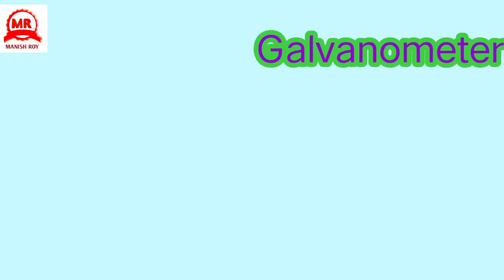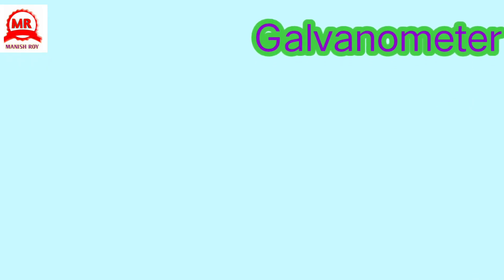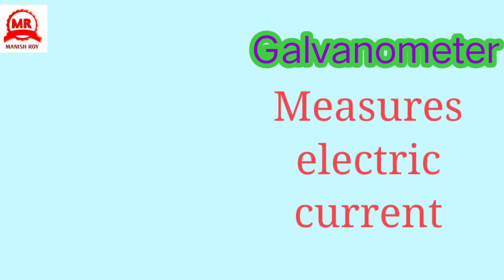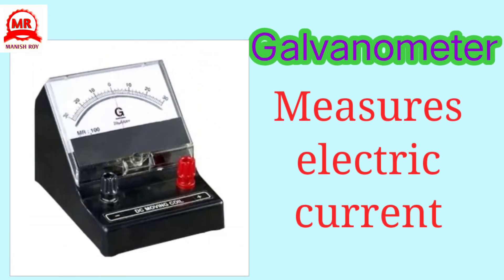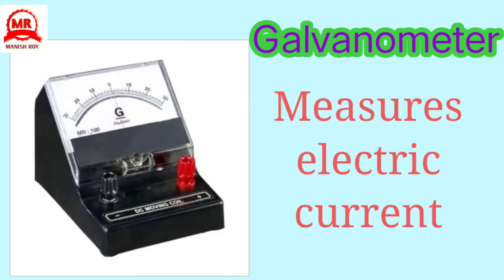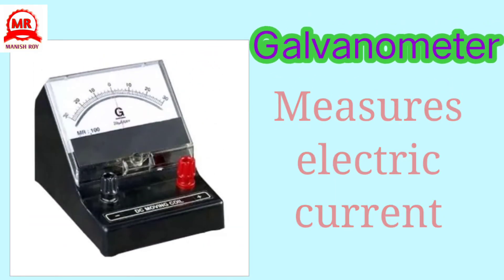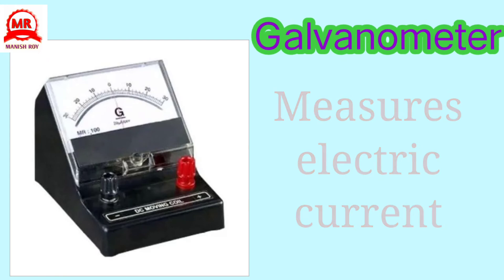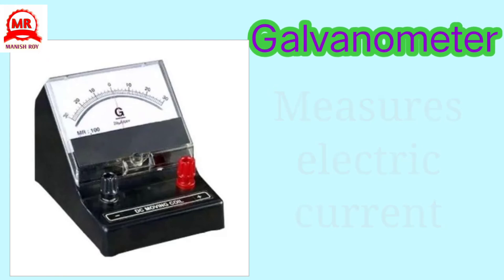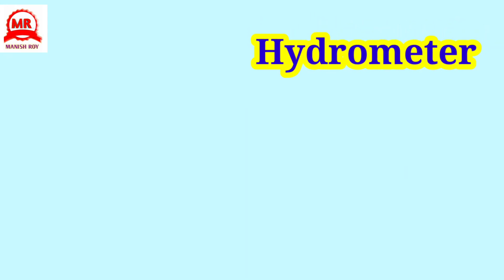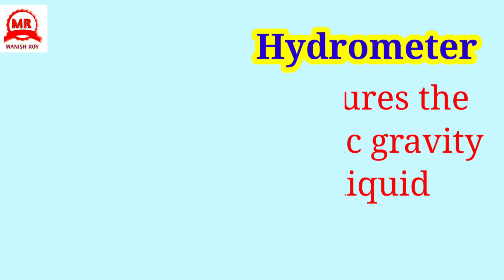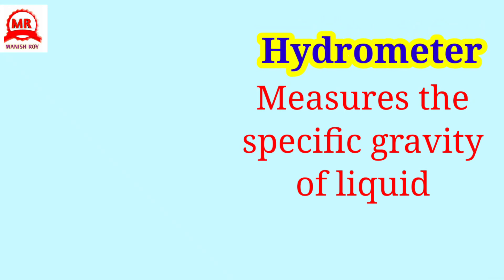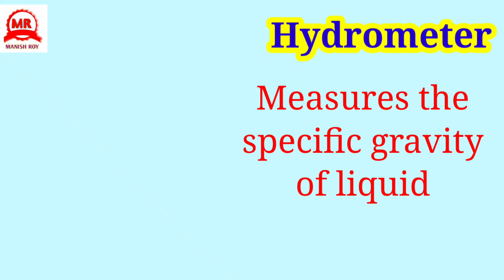Galvanometer: measures electric current. Hydrometer: measures the specific gravity of liquids.